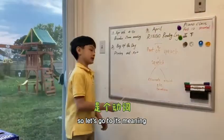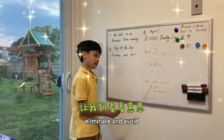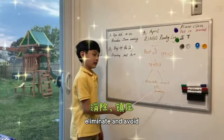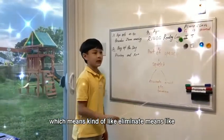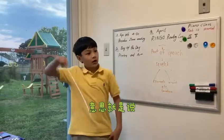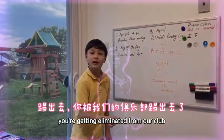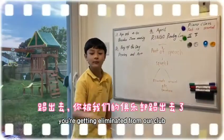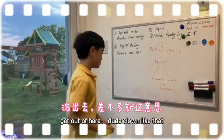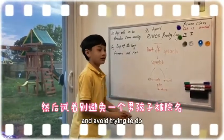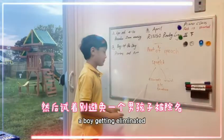So let's go to its meaning. Its meaning is eliminate and avoid. Eliminate means like get kicked out — like you're getting eliminated from our club, getting kicked out. Like, get out of here, unicorn. And avoid means trying to avoid getting eliminated.